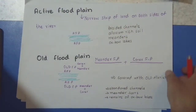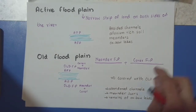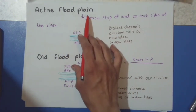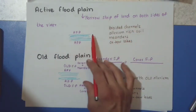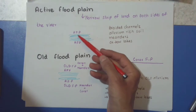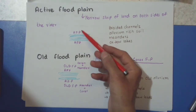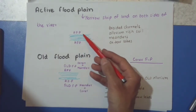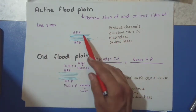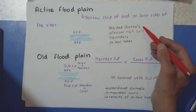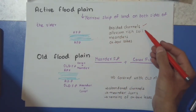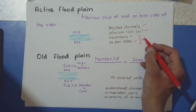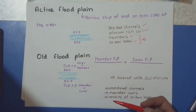Now looking at the features formed within the Indus Plain: the active flat plain, the old flat plain, and the alluvial terraces. Active flat plains are narrow strips of land on both sides of the river. The immediate land situated on either side of the river is called the active flat plain — it is a narrow strip that remains inundated or flooded with water throughout the year. The features formed here include braided channels, rich alluvial soil, meanders, and oxbow lakes. I have discussed meanders and oxbow lakes in a previous video, with the link in the description box below.